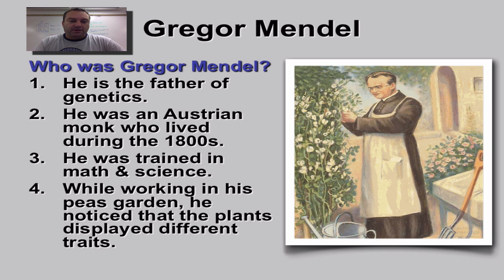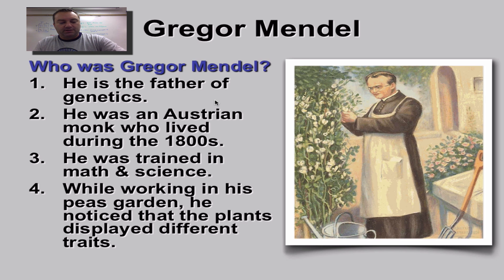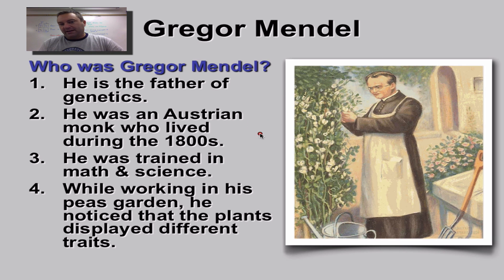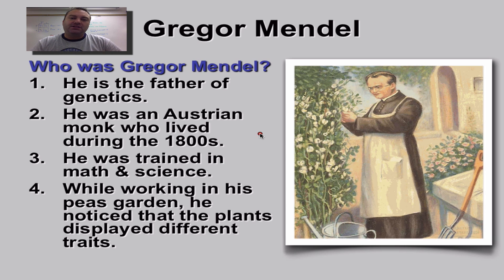Gregor Mendel is the father of genetics, and he did his work in kind of an interesting time in history. He's an Austrian monk who basically works at what you would consider today a Catholic high school, and he is a math and science teacher. So he gets science — he understands the scientific method.